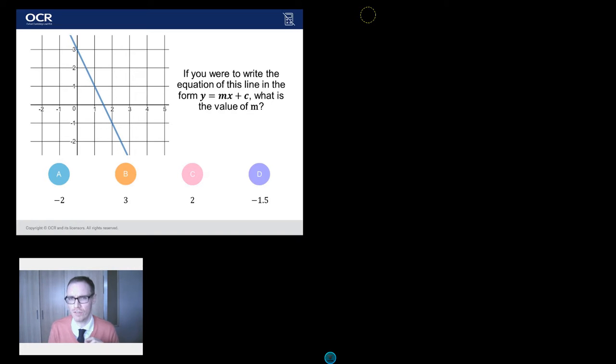I always pick questions that have got a little bit of a twist to them, questions that are causing students around the country no end of trouble. And this one unfortunately also falls into that group. It's on one of my favorite topics, but students don't seem to be a fan of this topic, straight line graphs. It's being written by OCR and it goes a little something like this. If you were to write the equation of this line in the form y equals mx plus c, what is the value of m? We've got a straight line graph there.